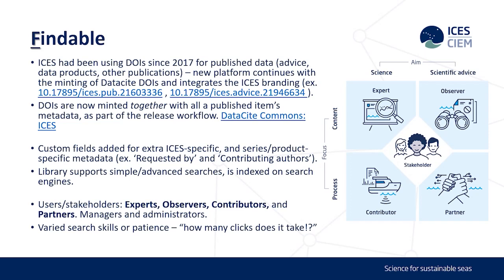Custom fields were added in how we set it up to make it extra ICES-specific and specific to the different kinds of publications we have — for example, requested by or contributing authors. The library supports simple and advanced searches and is indexed on search engines. We have a lot of different users and stakeholders at ICES, some managers and administrators, so different sorts of people use our library with varied search skills and patience. A lot of the feedback we got is: how many clicks does it take to get me to here? Some people are fine with a few clicks and some just want it right there.